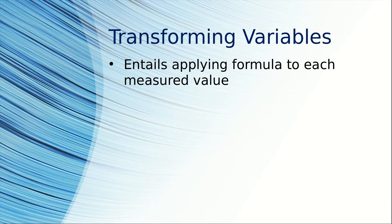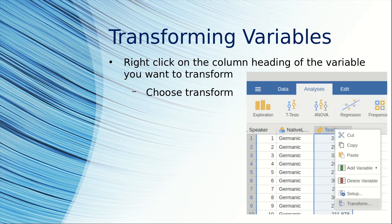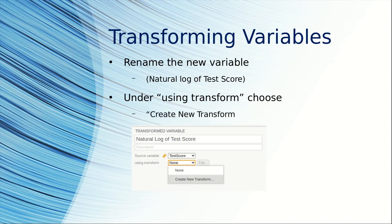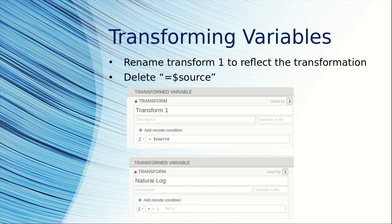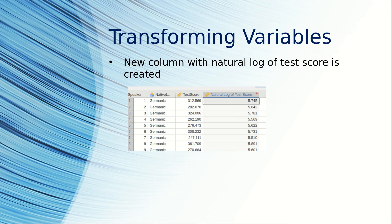Transforming variables: when you transform a variable, you apply a formula to each measured value. Here's an example of transforming variables into their natural logarithms. Right-click on the column heading of the variable you want to transform — in this case, test scores — then choose Transform. Rename the new variable; I renamed it 'natural log of test score.' Under 'Using Transform,' choose 'Create New Transform,' rename the transformation, then delete the placeholder and click FX. Double-click on LN (the natural log), then double-click on the test score variable, and it will fill in the formula for you. Click outside the box, and a new column with the natural log of the test score is created.